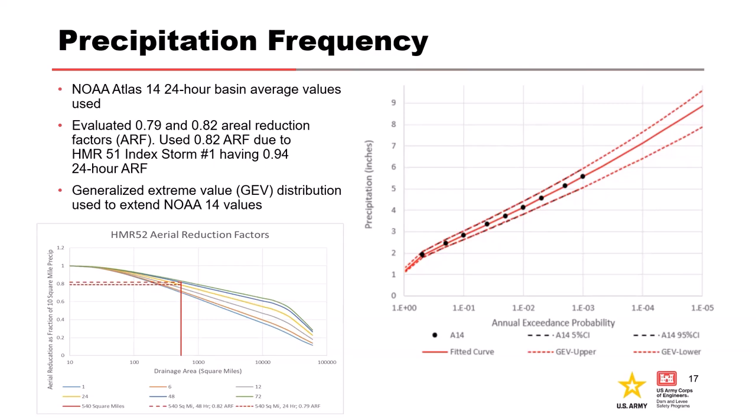After we pulled all of our NOAA Atlas 14 precipitation data for all three curves—the upper, the lower, and the computed curve—we extrapolated them using a GEV fit with a spreadsheet tool we had at the time.